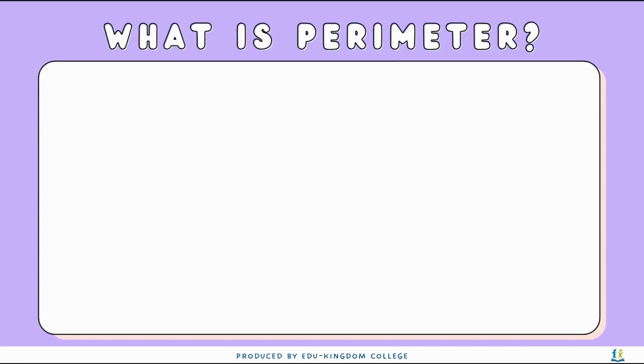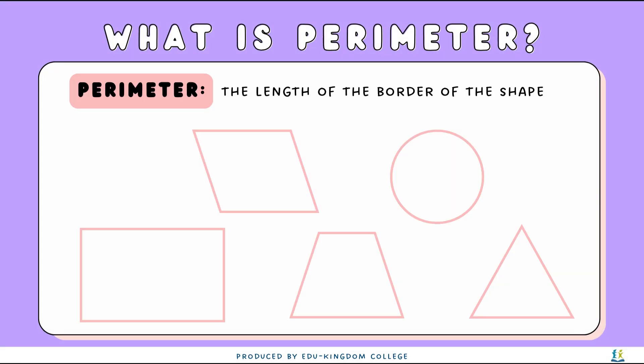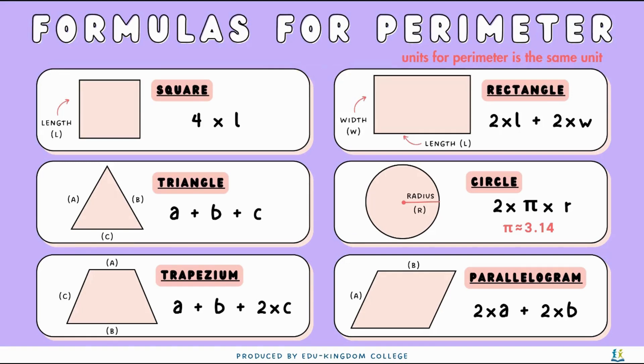What is perimeter? Perimeter is essentially the border of a shape. As you can see, the border is all coloured in pink here. The formula for perimeter is very simple — it's just adding all the sides of the shape together.